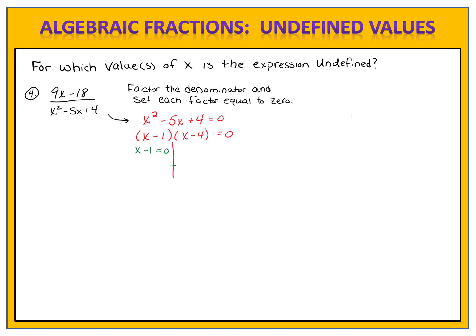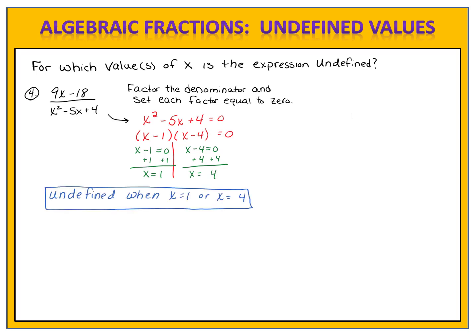Then we look at each factor separately. We look at x minus 1 and set it equal to zero, and we look at x minus 4 and set that equal to zero. We solve each of those equations. On the left we have x equals 1; on the right we have x equals 4. Those are the undefined values. This fraction is undefined when x equals 1 or x equals 4. We could list this using set notation, separating the two numbers by a comma, with the smaller number first and the larger number second.